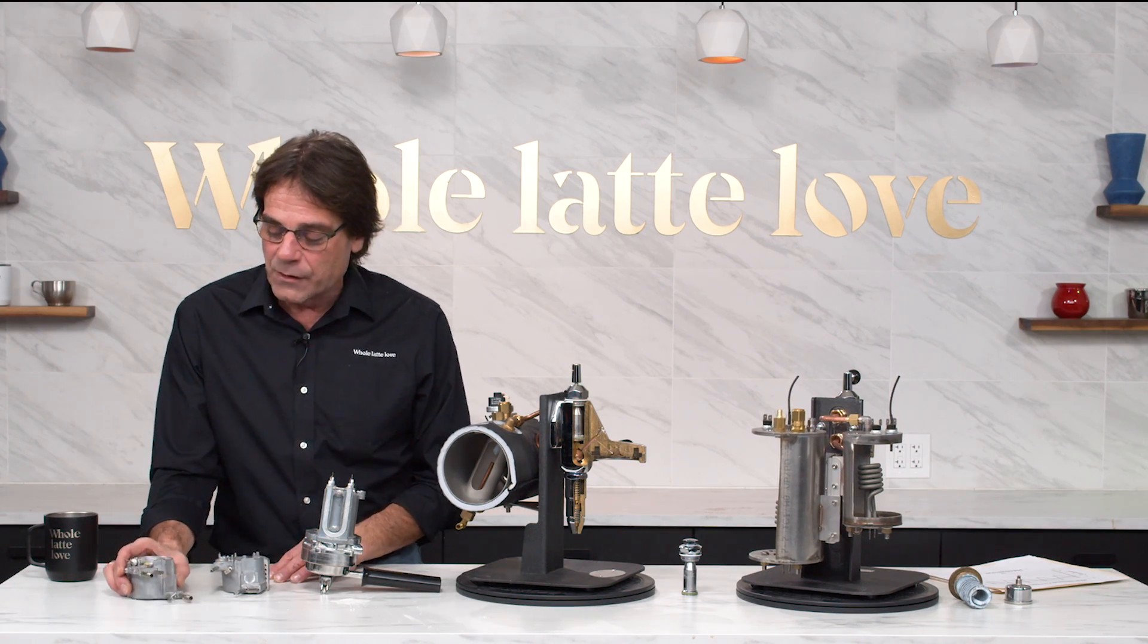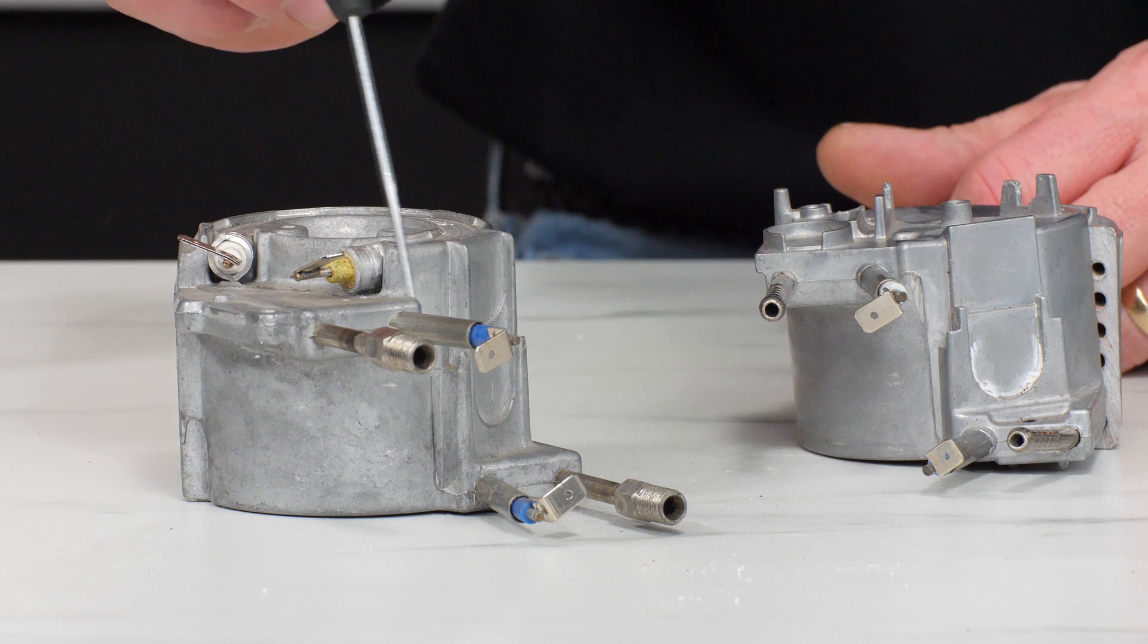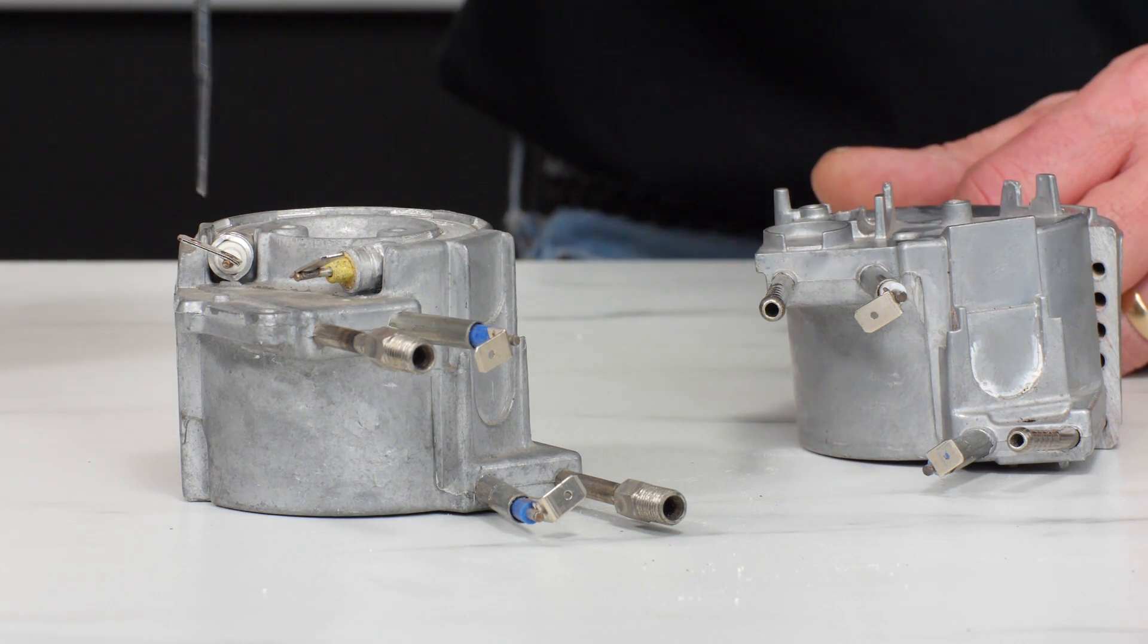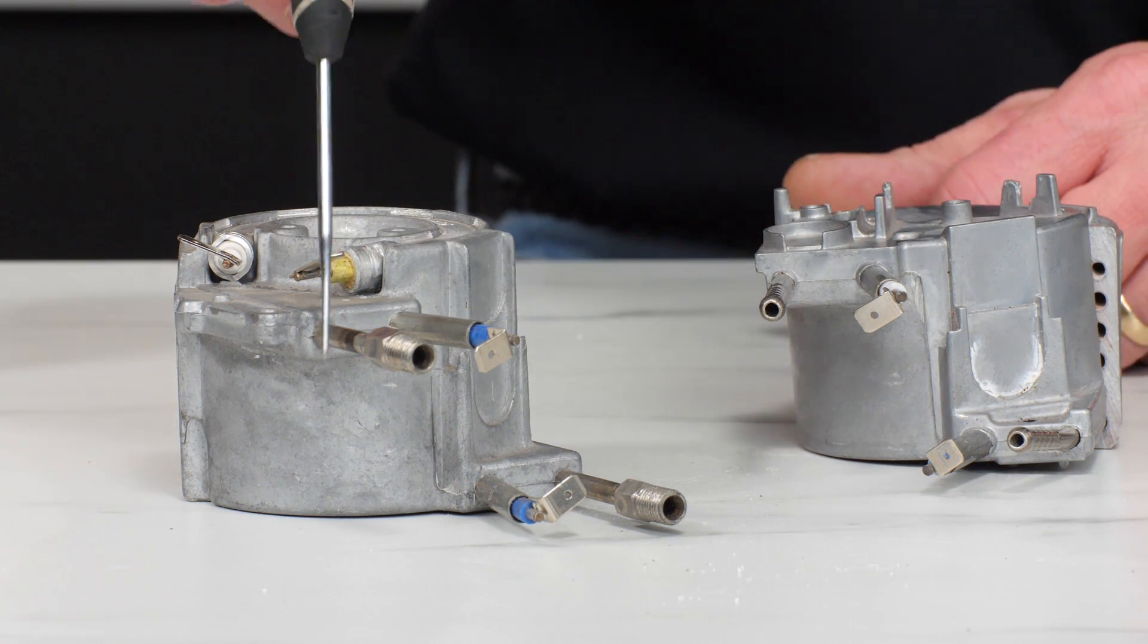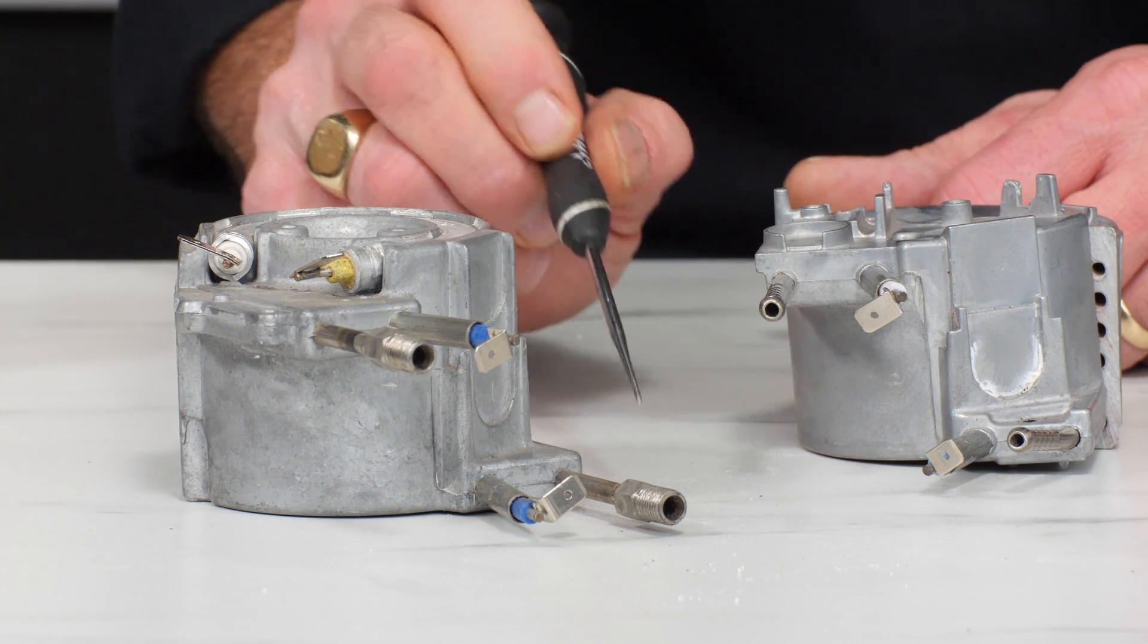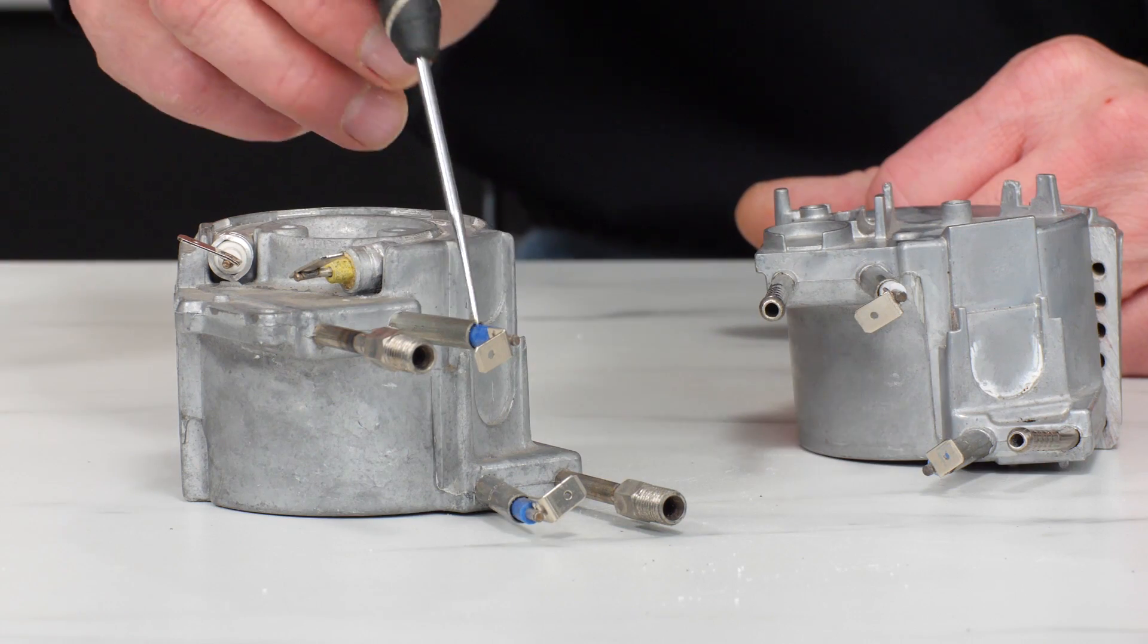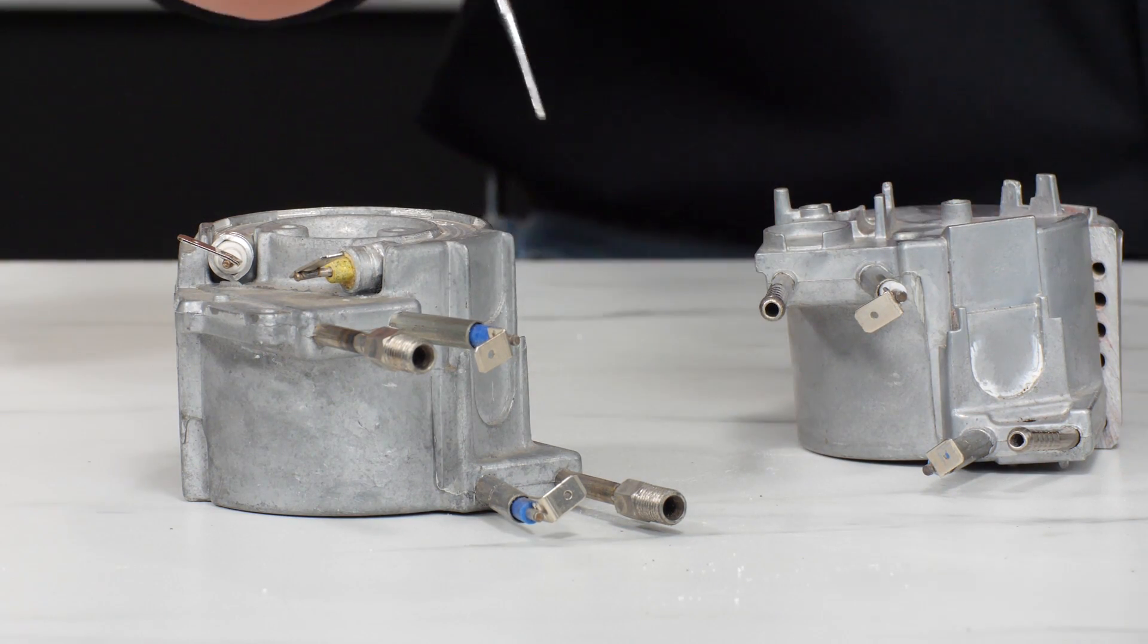There's basically a block of aluminum and inside water's gonna come in one of these pipes and out the other one and it spirals through inside of this aluminum block. These pipes are generally stainless steel that run through inside that aluminum block and then there's a heating element that's embedded in the boiler that heats the water.